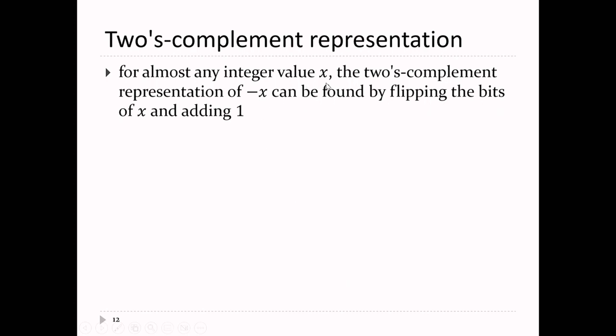If I give you any integer value x, the two's complement representation of minus x can be obtained by flipping the bits of x and adding one. So if I have x and I want to compute minus x: flip all the bits of the number and then add one.